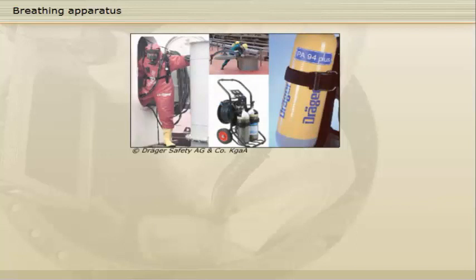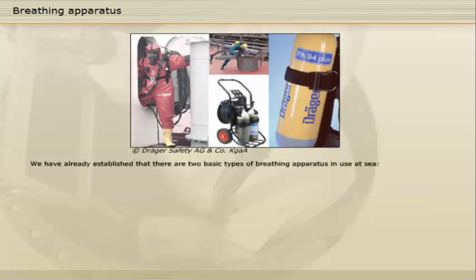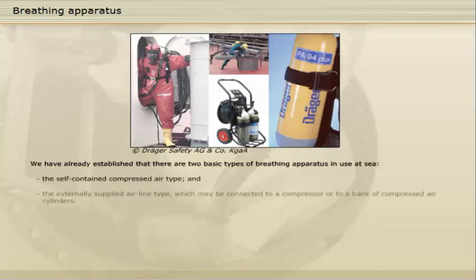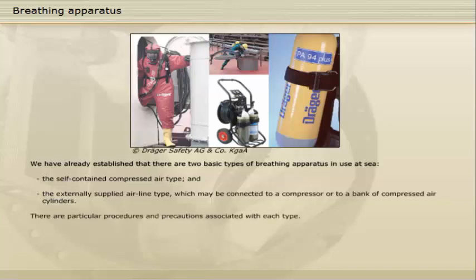There are two basic types of breathing apparatus in use at sea: the self-contained compressed air type, and the externally supplied airline type, which may be connected to a compressor or to a bank of compressed air cylinders. There are particular procedures and precautions associated with each type.